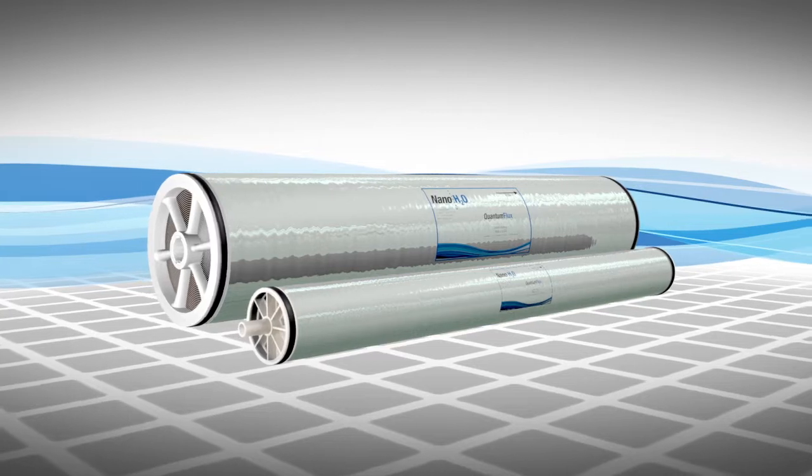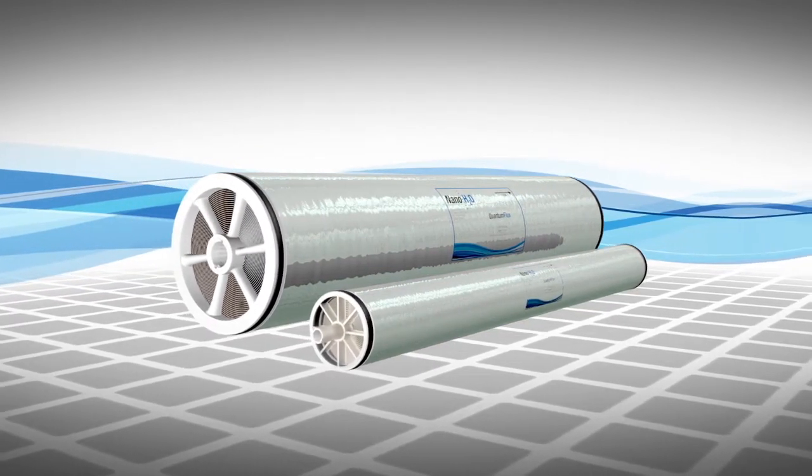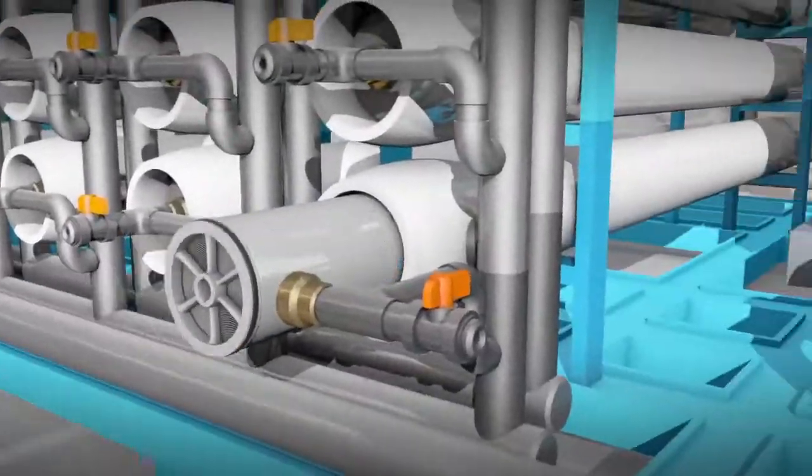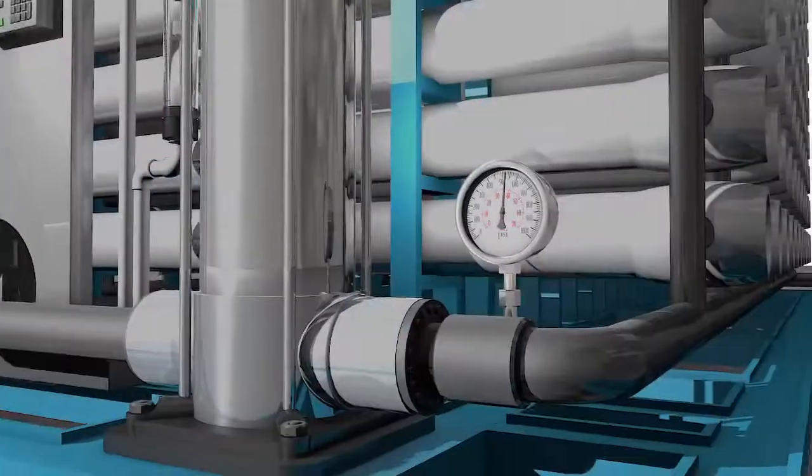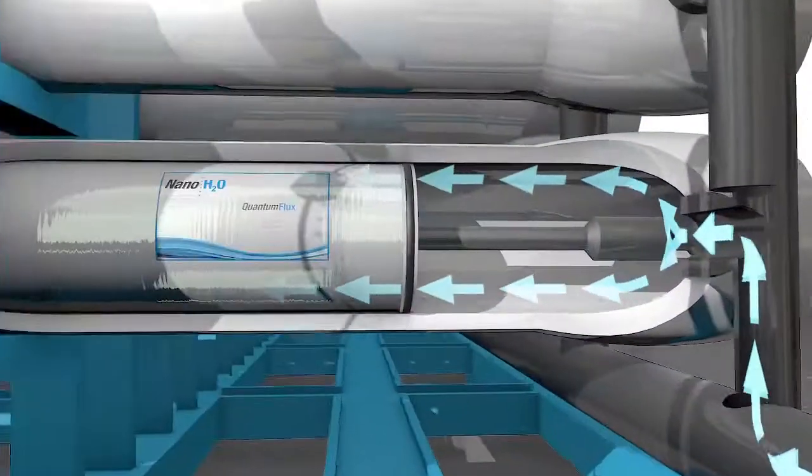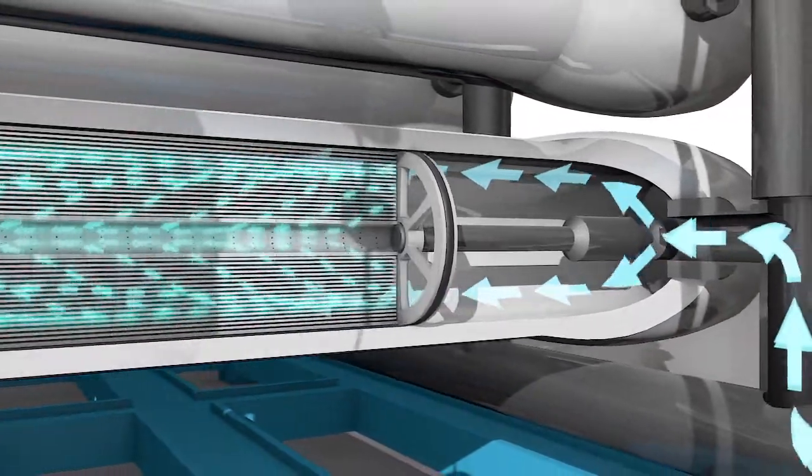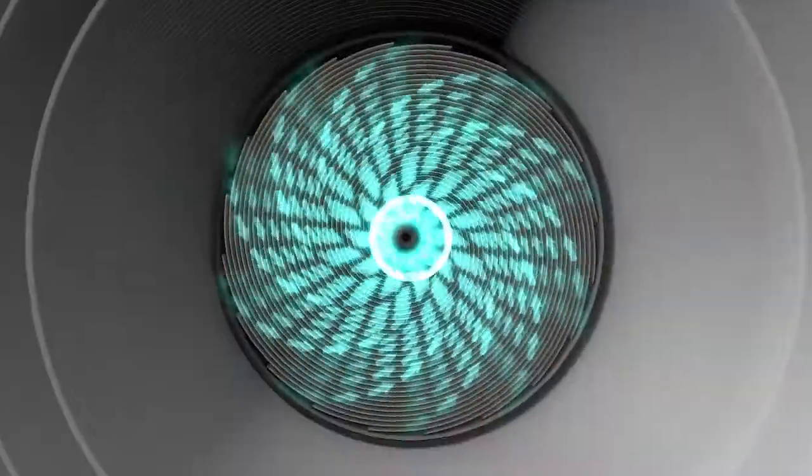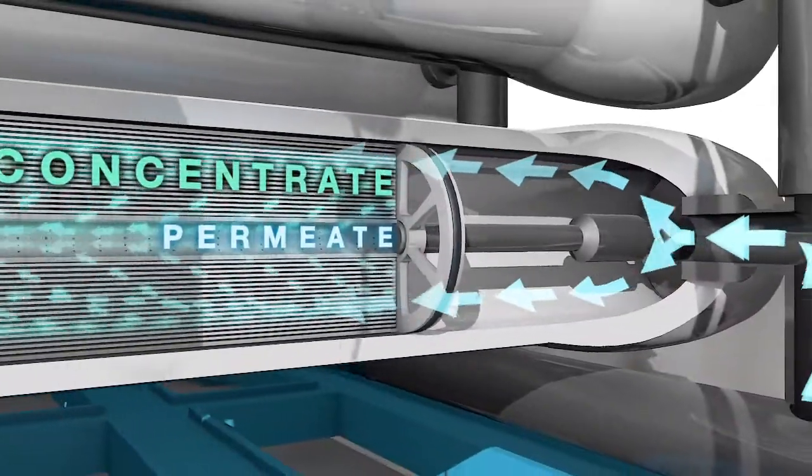Quantum flux membranes are manufactured in 4- or 8-inch elements that fit into industry-standard pressure vessels. Once quantum flux elements are loaded and arranged in sequence within standard pressure vessels, a high-pressure pump introduces feedwater. Pumps drive the feedwater through the membrane elements. This process separates salt as concentrate and fresh water as permeate.